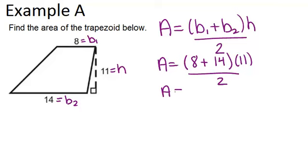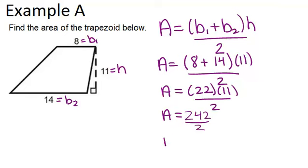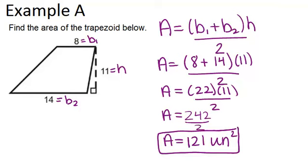So first you want to add up 8 plus 14, which gives you 22, and then times by 11, and then divide by 2. So 22 times 11 is 242, and then you divide by 2 to get your final answer of 121 units squared. Remember that for area, you always want to have units squared because area is the number of little unit squares it would take to fill up the shape.